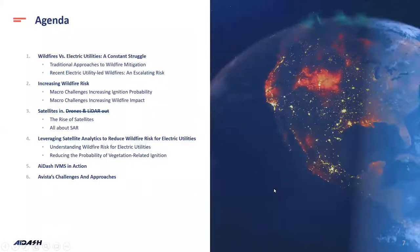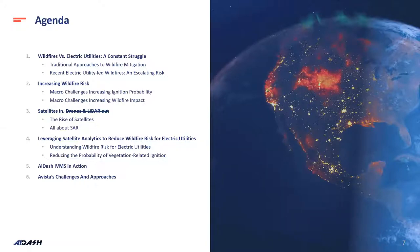Here's the agenda for today: traditional approaches to vegetation management, wildfire risk mitigation for electric utilities, and the escalating nature of this risk. There are a lot of macroeconomic headwinds you're facing, making this an increasingly difficult task. Then we'll talk about emerging technologies that enable better situational awareness, a holistic knowledge of what's going on in your network, and a risk-based approach to vegetation-related wildfire.